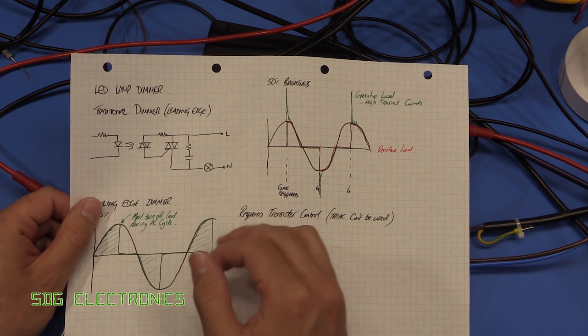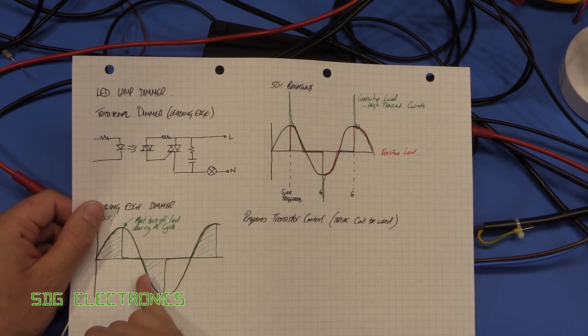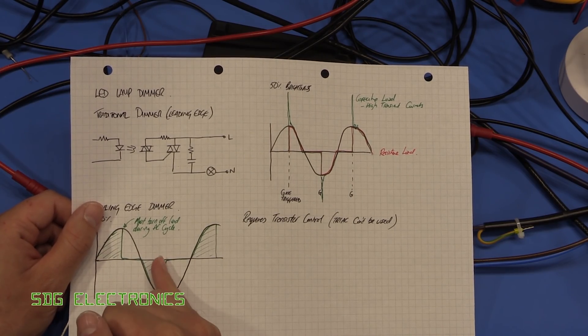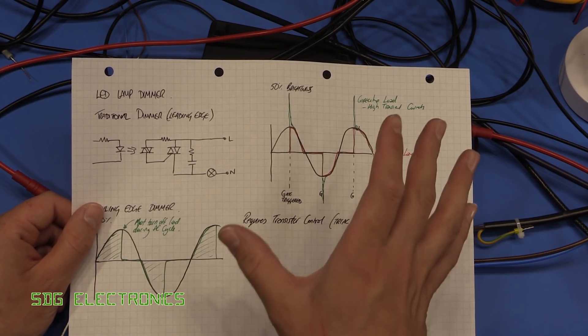So what we're trying to do is trigger the gate right on the zero crossing point and then turn it off at some point through the waveform so that you achieve the desired brightness.